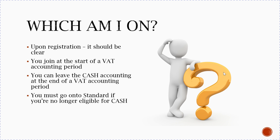There's no haggling or negotiation. And if you do want to be on cash accounting and you're under that threshold of £1.35 million, you can go on to cash accounting — you don't have to tell HMRC, you don't have to request or ask permission — just do so from the start of the following accounting period.